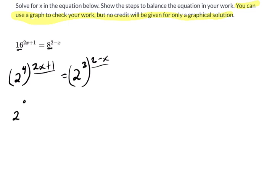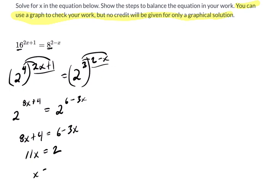We get 2 to the 8x plus 4. Don't forget to distribute it to both. The only way these two sides can be equal is if 8x plus 4 equals 6 minus 3x. And we can solve that. Add 3x to both sides. 11x subtract 4 on both sides is 2. And here's your answer. x is 2 11ths.